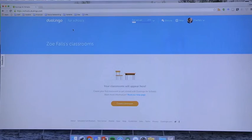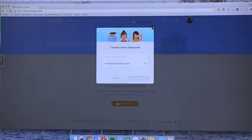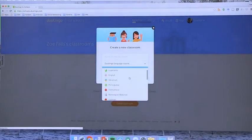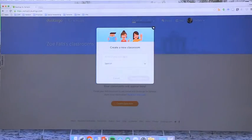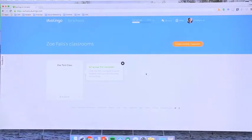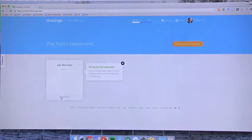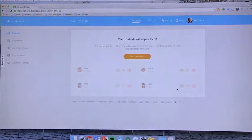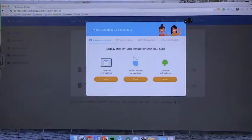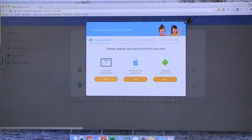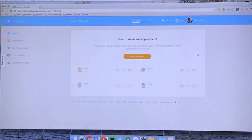And there is a Duolingo for schools. So if you go to schools.duolingo.com, you can create a classroom. And you can choose from various languages. So I'm going to call this test class and you create a classroom. And that's a Spanish classroom. And this is where you invite your students and you can do that through any of the devices. And so in this way you can have that classroom control.